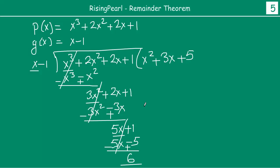So when we divide this, when we divide p(x) by g(x), in that case, the quotient will be this polynomial and your remainder is 6.